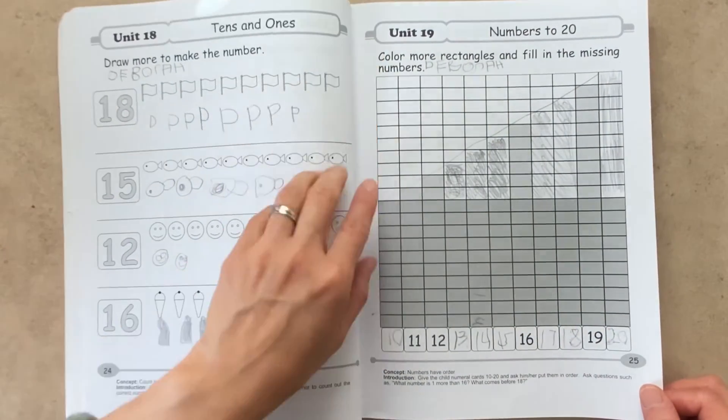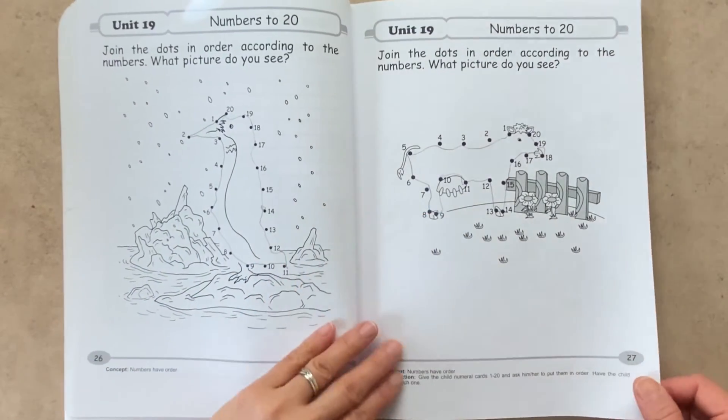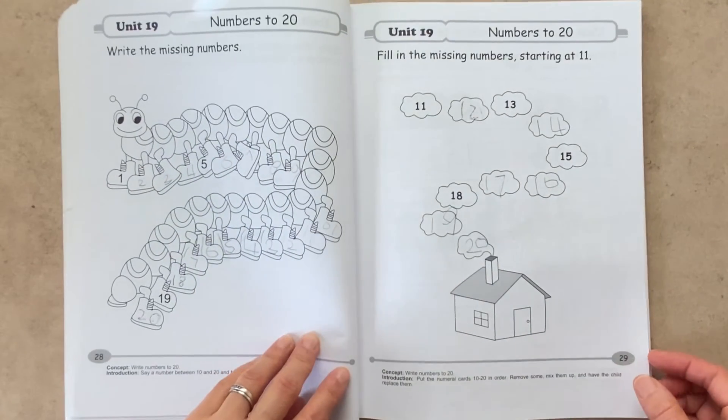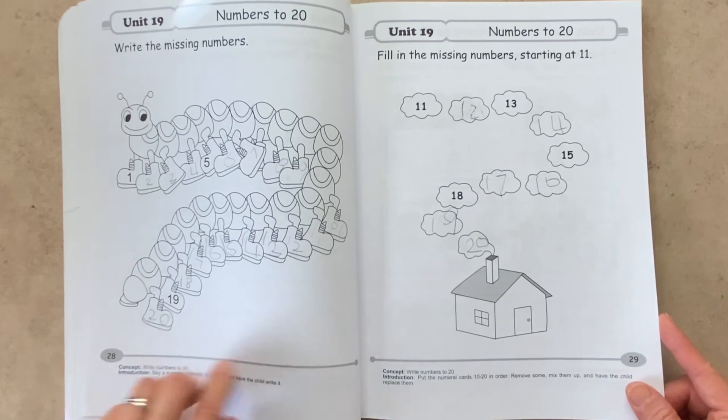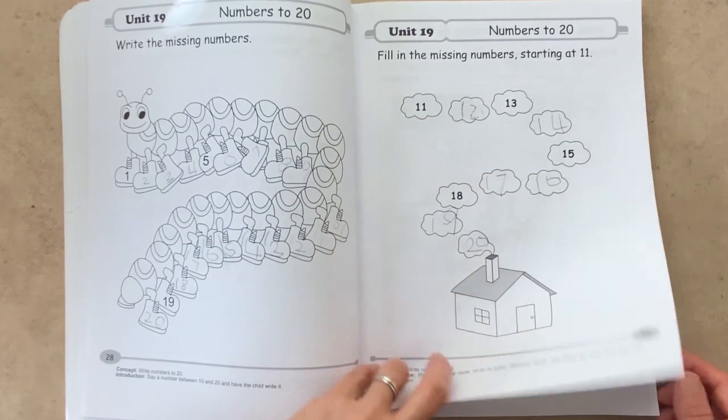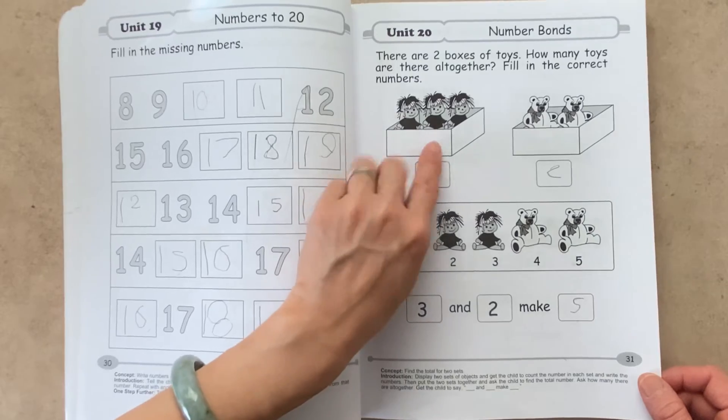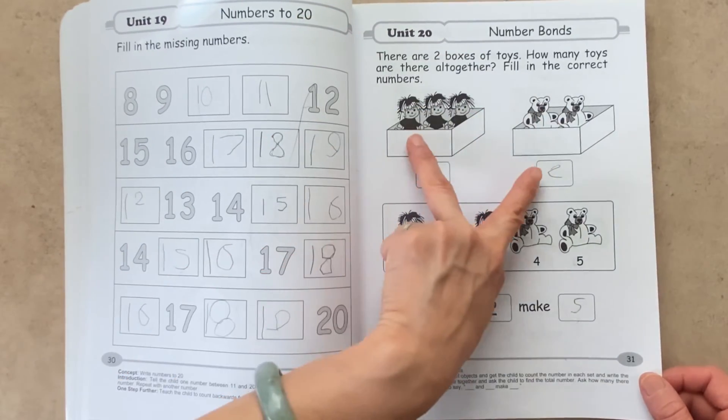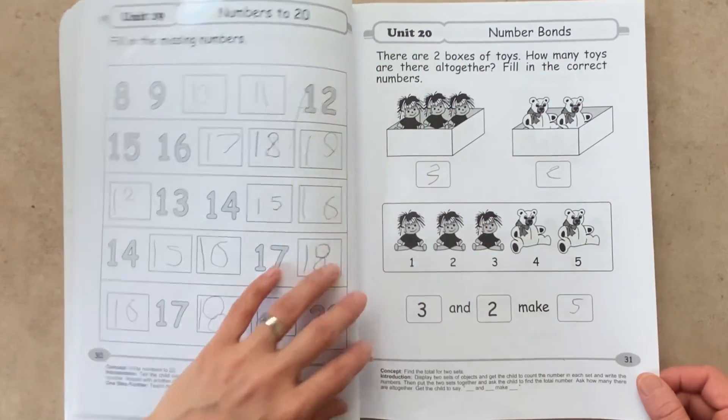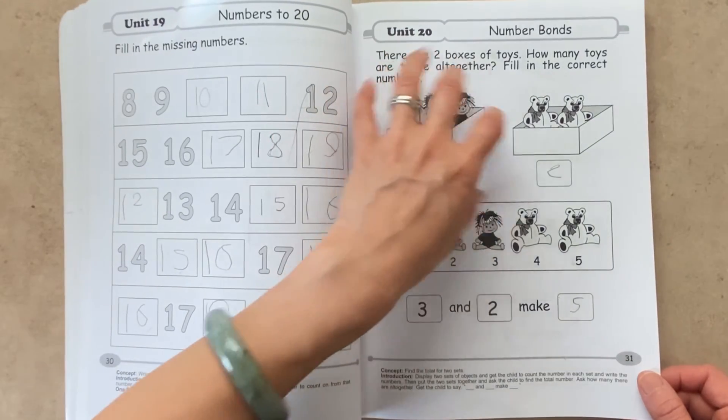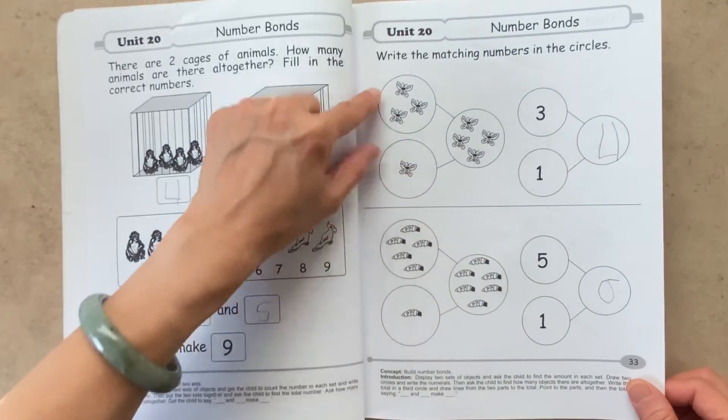And now we're moving on to unit 19, where we have numbers up to 20. So you're going to get some connected dots, and then filling in the missing numbers in this caterpillar. And we're filling in numbers that are missing. Unit 20 is introducing the child to number bonds. So once we count how many are in this box, and then how many are in that box, we can be able to figure out how many are all together. So it's almost like part to whole. So it's showing that, but in more of a pictorial way. See, here's where we have the part to whole.